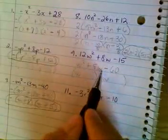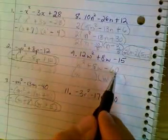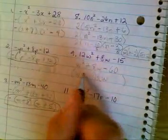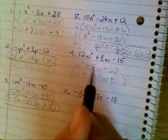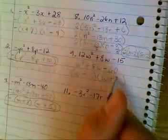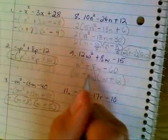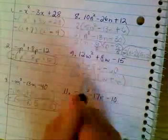So let's see, they need to multiply into a negative. So one of these is negative, one of them is positive. It has to add up to positive 8. So the 12 should be positive. Is 12 minus 5 equal to 8?